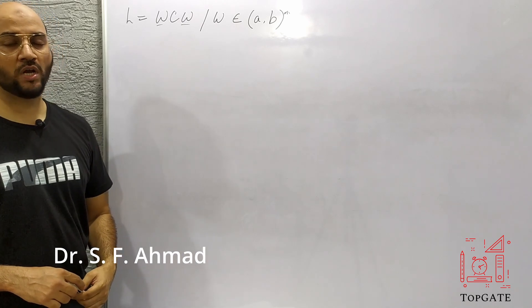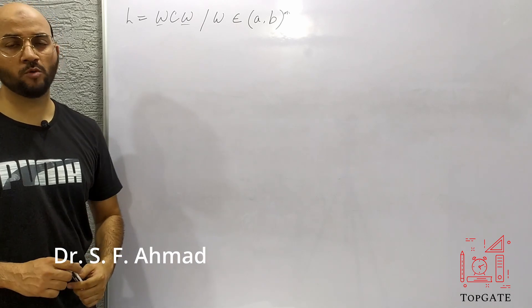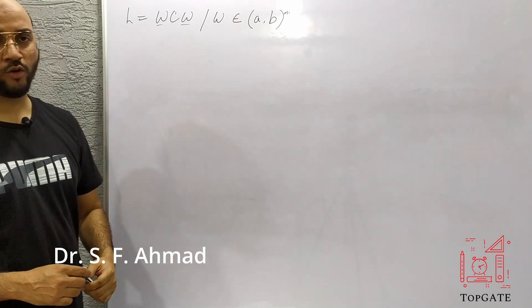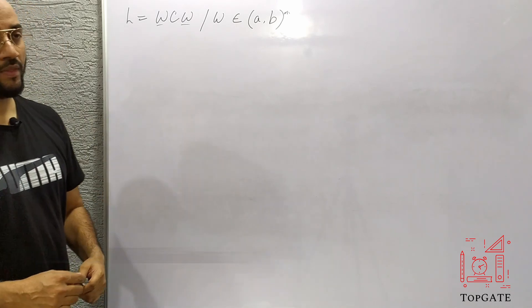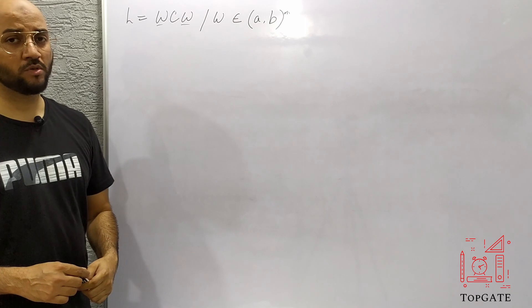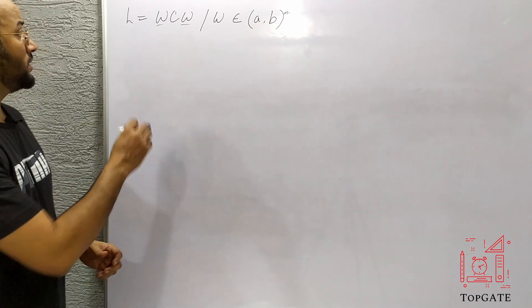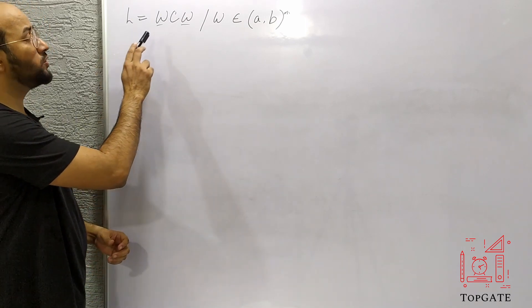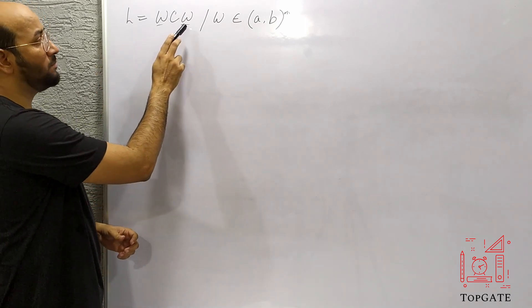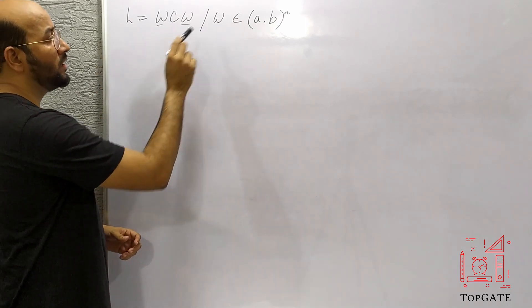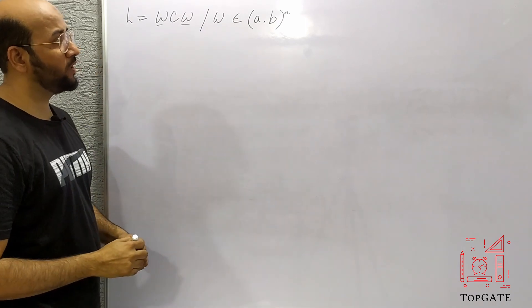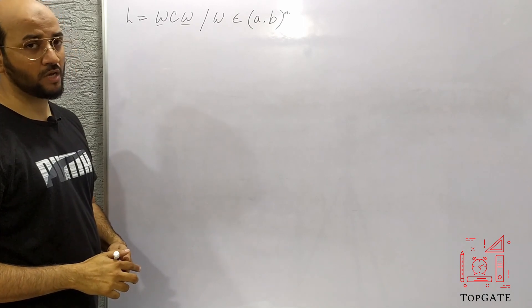Hello students. In this video I will discuss one more problem of Turing machine — that is to design a Turing machine for the language L = WCW where W belongs to {A, B}*.